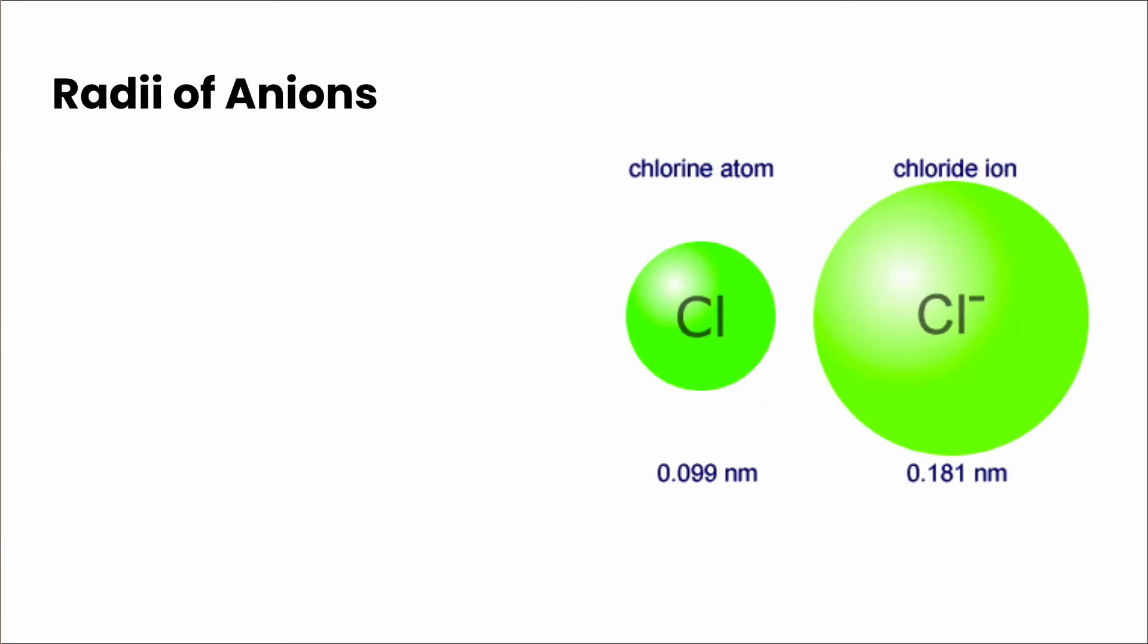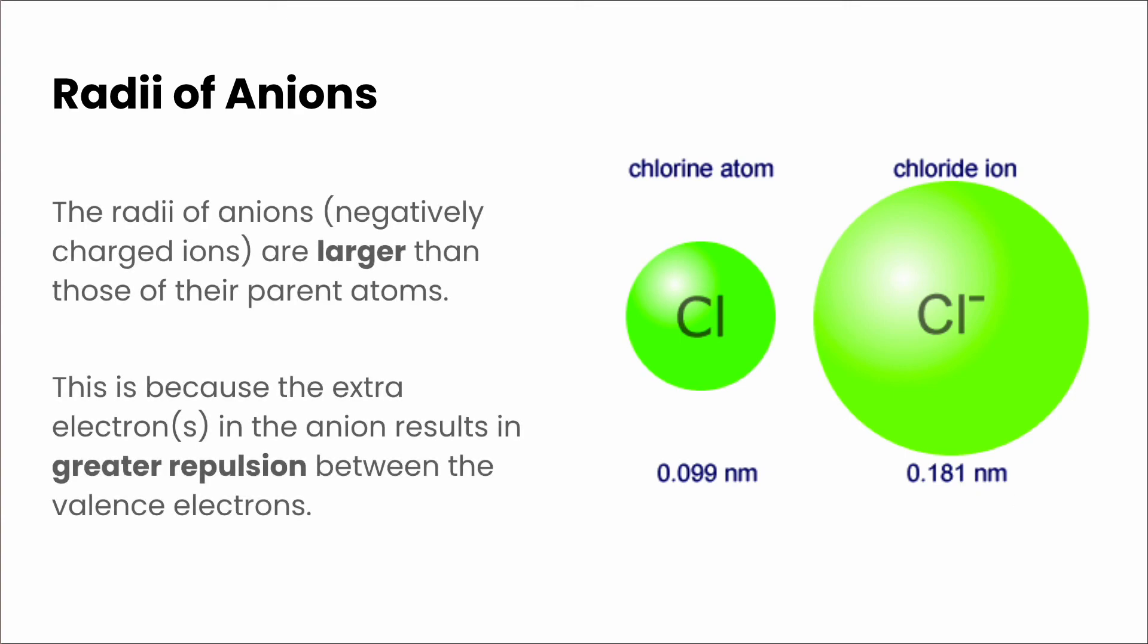If we look at anions though, we get the opposite sort of effect. The atomic radius of chlorine is 0.099 nanometers versus the chloride ion is 0.181 nanometers. So whenever we have anions or negatively charged ions, they're actually larger than their parent atoms. And that's because the extra electrons in the anion result in greater repulsion between the valence electrons. So that increases the radius of those ions.